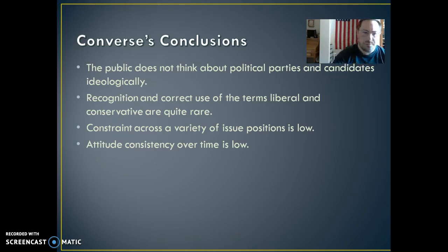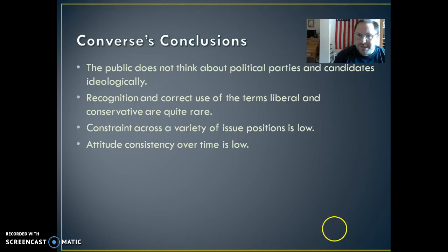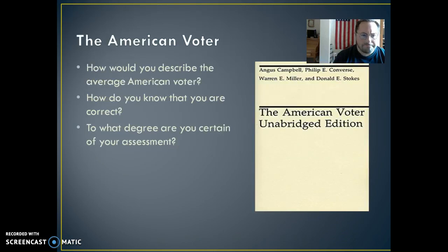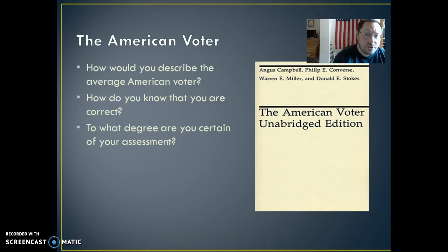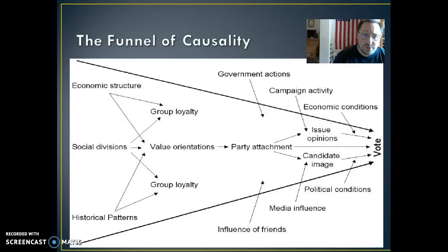Converse's conclusions are that the public does not necessarily think about political parties and candidates ideologically — a large minority don't think about politics on those terms. Recognition and correct use of the terms liberal and conservative is actually quite rare. Constraint across a variety of issue positions is rather low, meaning people are not consistent — they're all over the map in their issue positions. Attitude consistency over time is also low: you could ask someone their opinion on an issue one day, ask them again later, and get a very different answer. It's a fairly pessimistic look at how people think about politics.